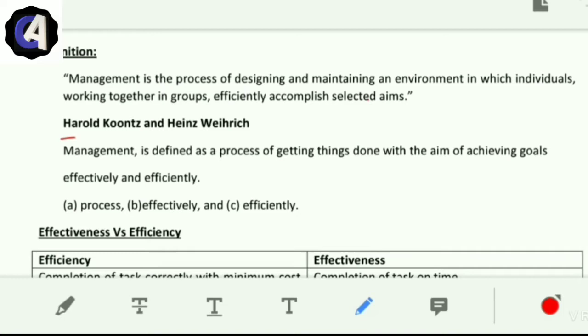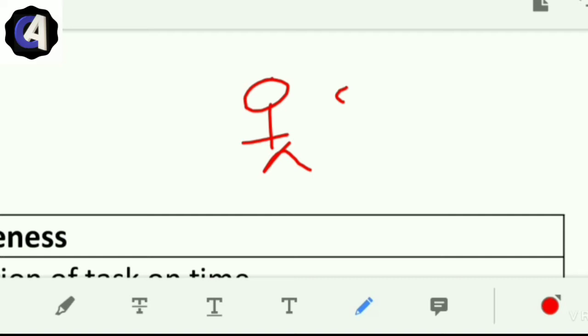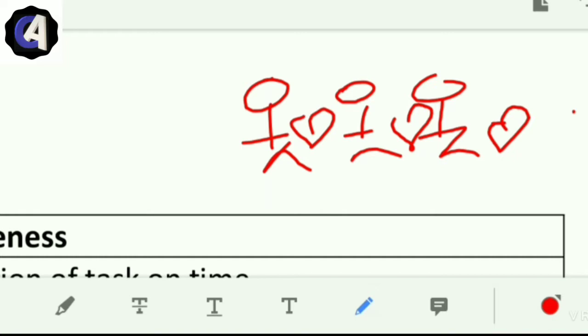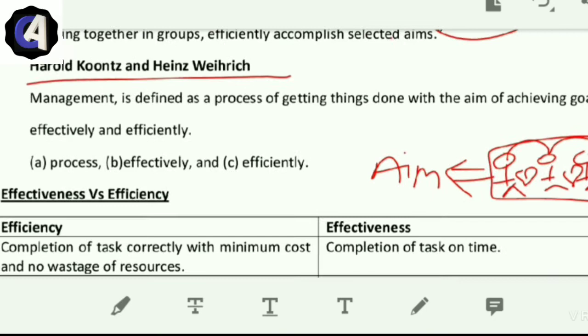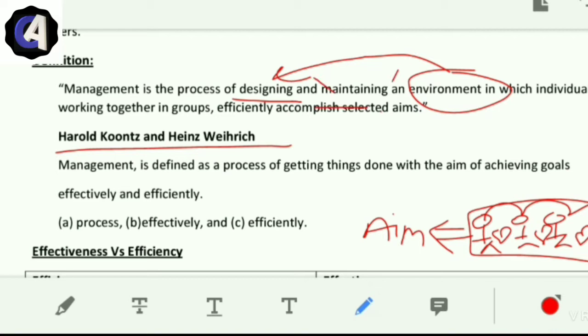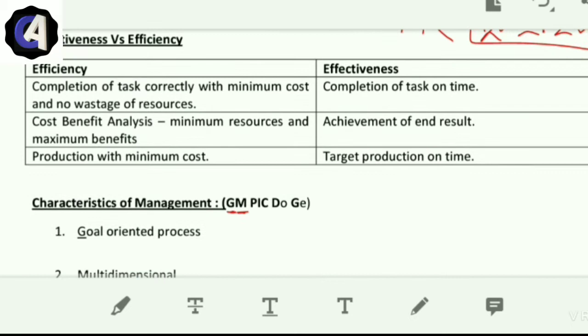Now we will see the definition of management. Harold Koontz and Heinz Weihrich's definition is important. Management is the process of designing and maintaining an environment in which individuals work together in groups to efficiently accomplish selected aims. You have to design and maintain such an environment if you are a manager.